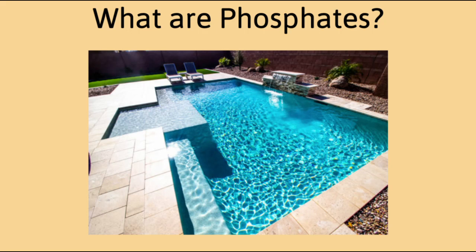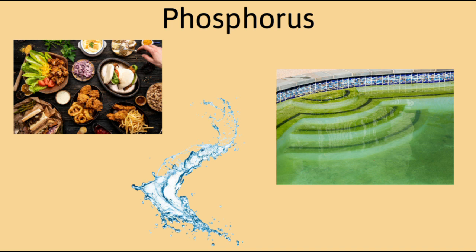Hi everyone, this is the Pool Hygiene Doctor and in today's episode we'll talk about what are phosphates. Phosphorus is everywhere — it is in our food, our water, and it is essential for life. This includes things that you don't want in your pool, like algae and bacteria. So too much of the nutrient phosphate in your pool can cause algae growth, and controlling phosphates will help you control algae.